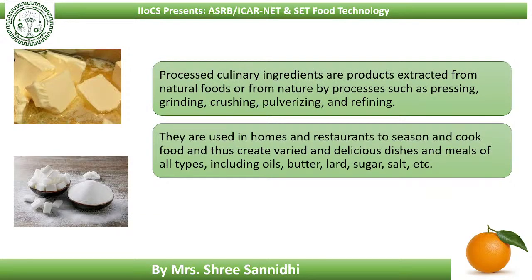Processed culinary ingredients are products extracted from natural foods or from nature by processes such as pressing, grinding, crushing, pulverizing, and refining. These are essentially extracts of Group 1 foods. They are used in homes and restaurants to season and cook food, creating varied and delicious dishes. Examples include oils extracted from oil seeds, butter from fat extraction of milk, lard, sugar, and salt.